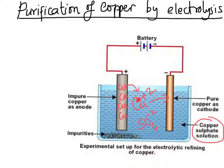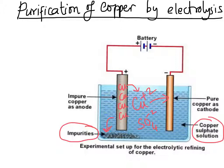The negative electrode grows and increases in mass as copper ions deposit onto it. The positive electrode slowly decreases in mass until eventually, at the end of the process, almost all the copper has migrated to the cathode. As for the impurities — they do not move into the solution; instead, they gather just below the impure copper rod, forming what is called anode mud. Only pure copper ions reach and deposit on the negative electrode.